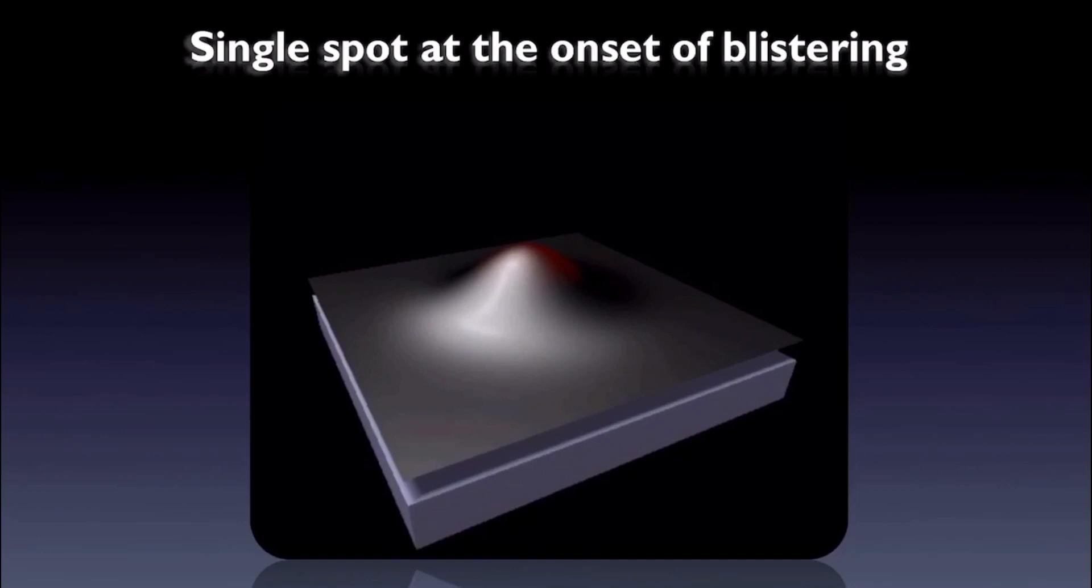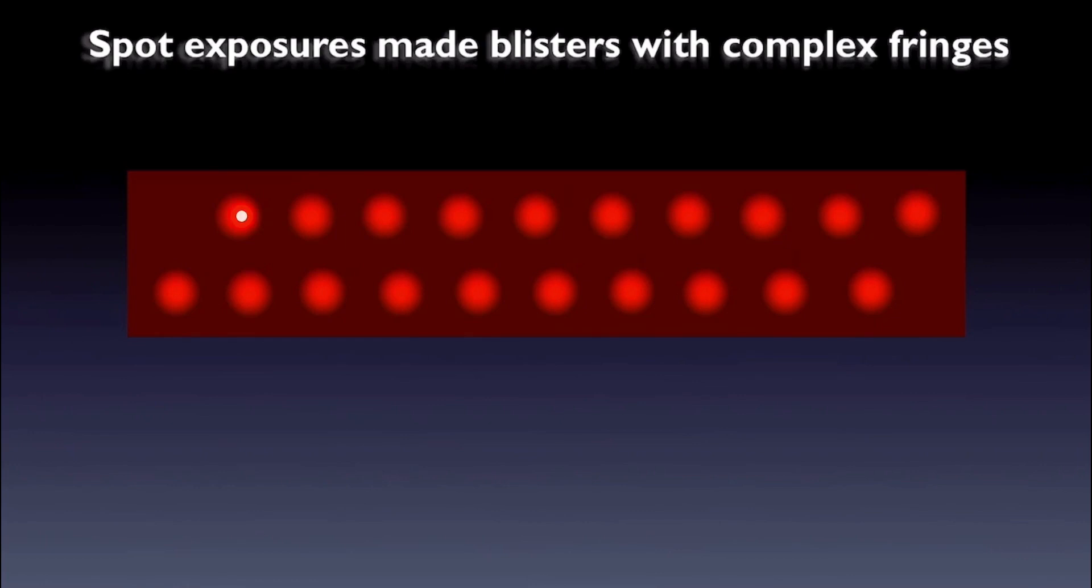What we did was we irradiated an array of single spots with irradiation times ranging from 0.1 seconds to 1 hour. So the laser irradiates here for 0.1 seconds, here for 0.2 seconds, here for 1 second, here for 1 minute, here for 1 hour, and so on.